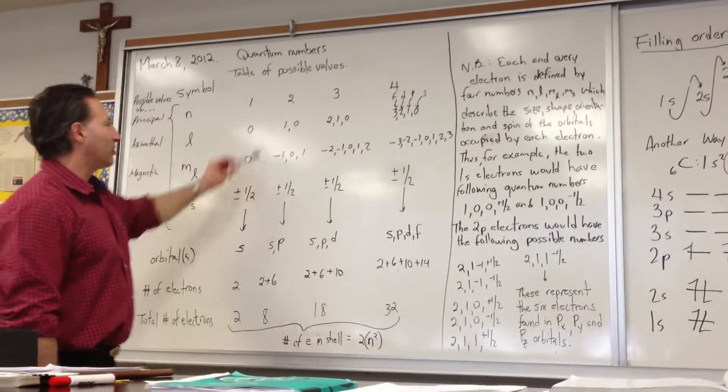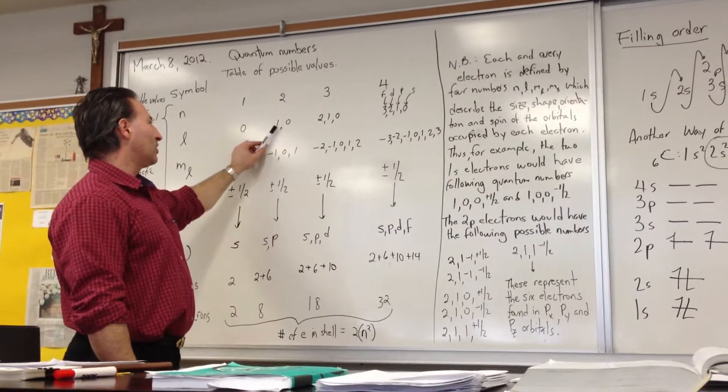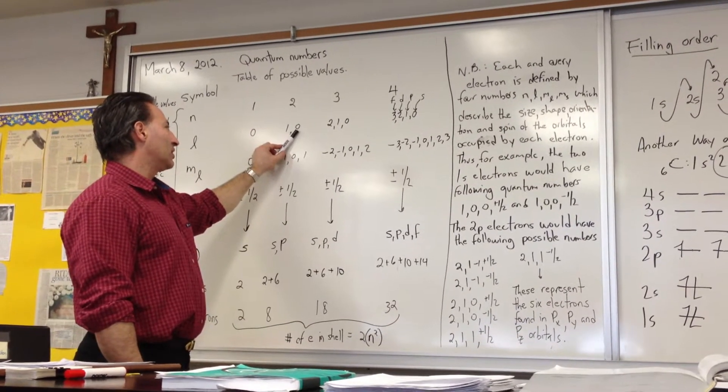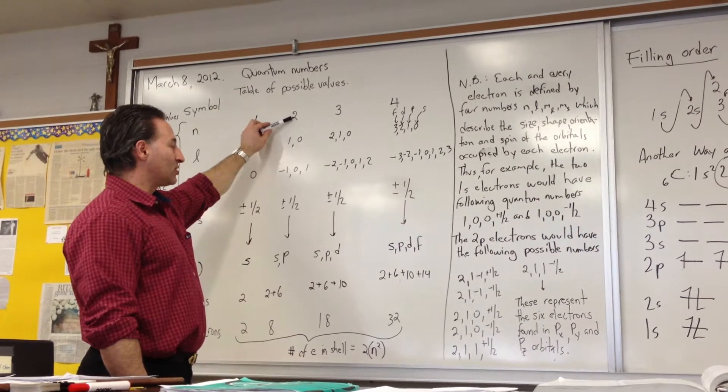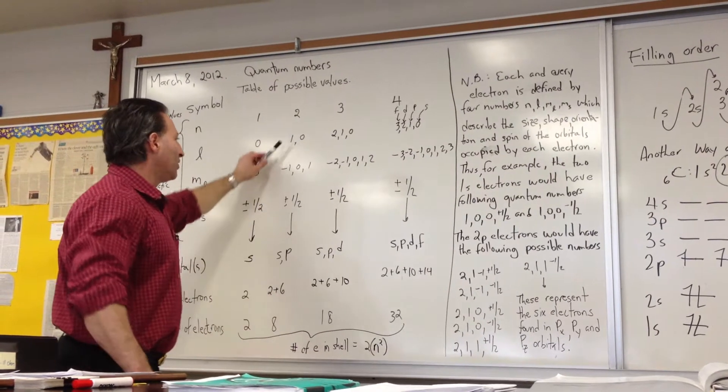If the principal quantum number is two, the value of l, the azimuthal, can be one or zero. One corresponds to a p orbital. A zero, we've already explained, is an s orbital. So when the principal quantum number is two, you can have either s or p orbitals.